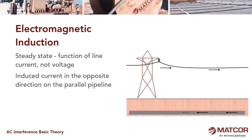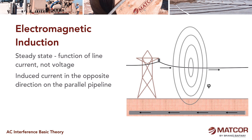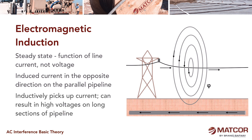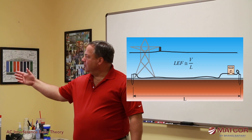This induced current flows in the opposite direction along that parallel pipe. How much that is depends on how much current is flowing through the line and a variety of other factors. If the pipeline is close enough to the transmission line and runs parallel to it for some period of time, it's going to be in the electromagnetic field that exists around the three lines of the AC transmission system.